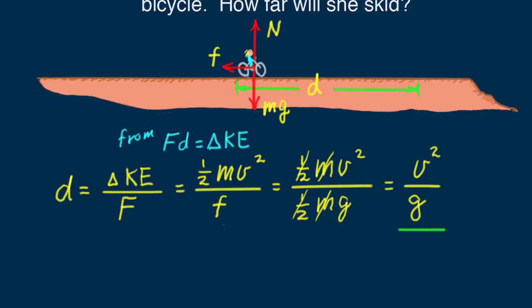How frustrating if you think maybe the problem cannot be solved because the mass of Nelly and her bicycle isn't given. That's why it's good practice to solve problems with symbols rather than numbers. With symbols, cancellation becomes evident. Symbols first, numbers later.